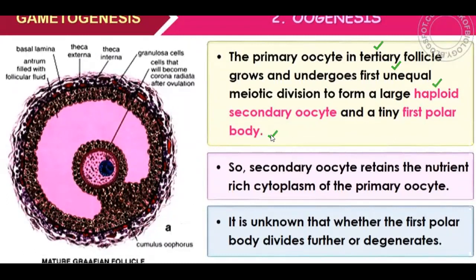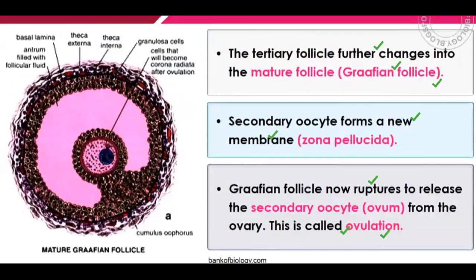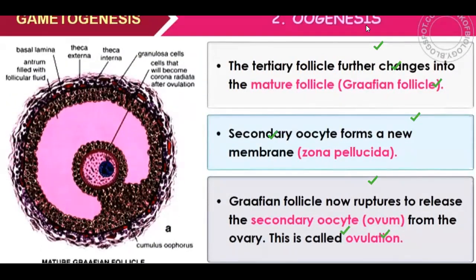When one cell does meiosis, it becomes four cells. The first polar body degenerates. After meiosis 1, the secondary oocyte retains the nutrient-rich cytoplasm of the primary oocyte. The first polar body may or may not remain — it is basically the secondary oocyte which participates in reproduction.